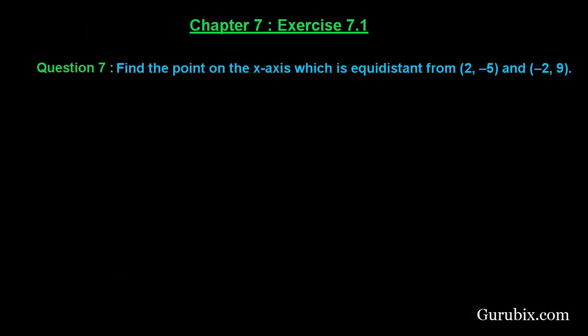Welcome friends. Let us solve question number 7 of exercise 7.1 of chapter 7. The question says: find the points on the x-axis which are equidistant from the point A(2, -5) and B(-2, 9).